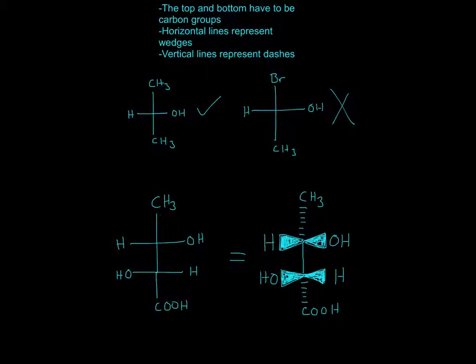Now vertical lines represent dashes. So notice how this one and this one, they're dashes. Dashes in organic chemistry mean that it's going into the page, so it's going away from you.